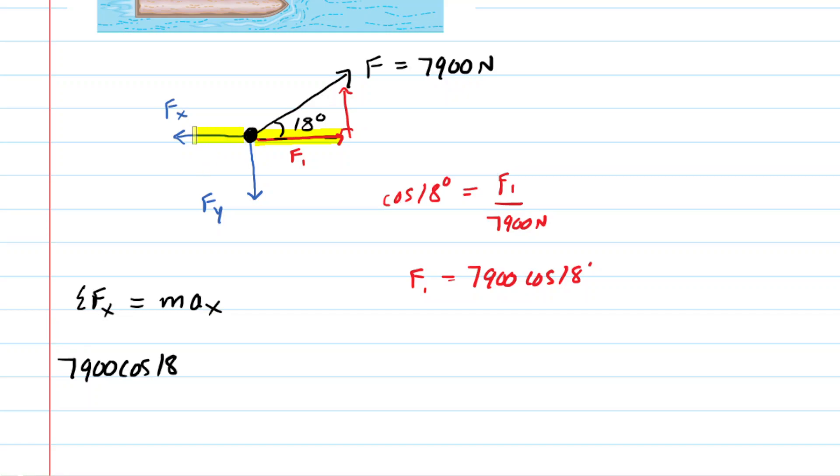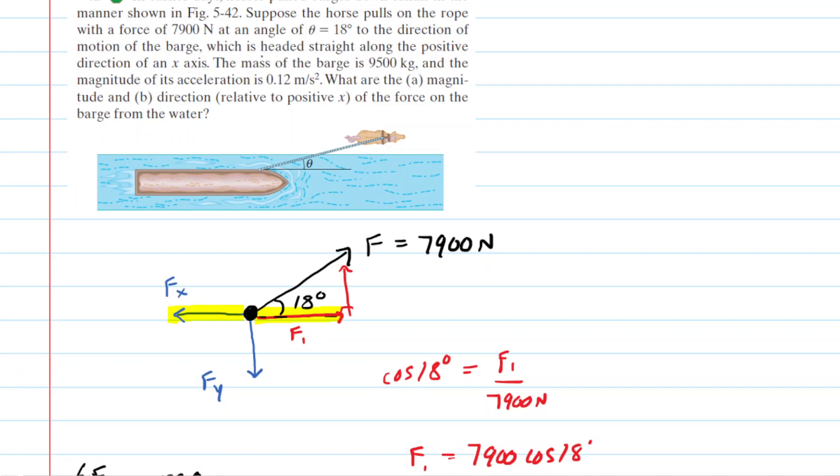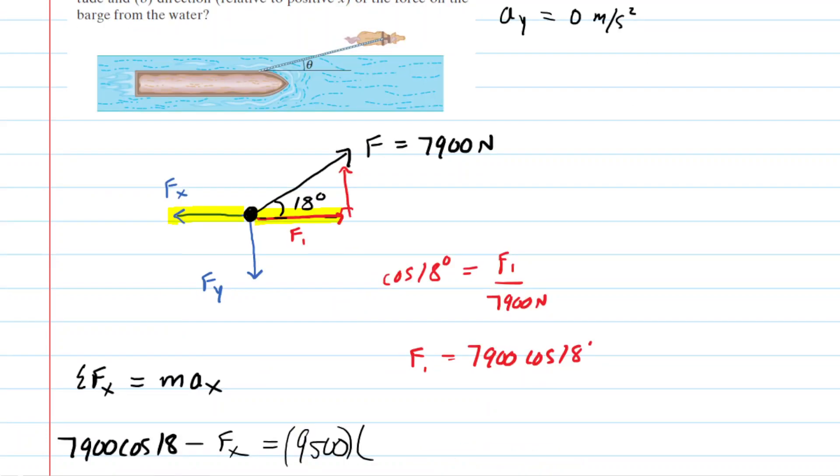We've got 7,900 cosine of 18, and then the other force acting in the X direction is Fx. Notice it's pointing to the left, so we're going to call that a minus Fx. Then we set this equal to the mass of the barge, which was 9,500 kilograms, multiplied by the acceleration in the X direction. Now, let's pause here and make sure we understand something. The barge is headed straight along the positive direction of an X axis, so this means that the acceleration in the X direction was the value given, it was that 0.12 meters per second squared. Because it's only moving along the positive X axis, we will see later that the Y acceleration is actually 0 meters per second squared. In other words, the barge is not accelerating in the Y direction. So for the X, we're going to fill in that 0.12.